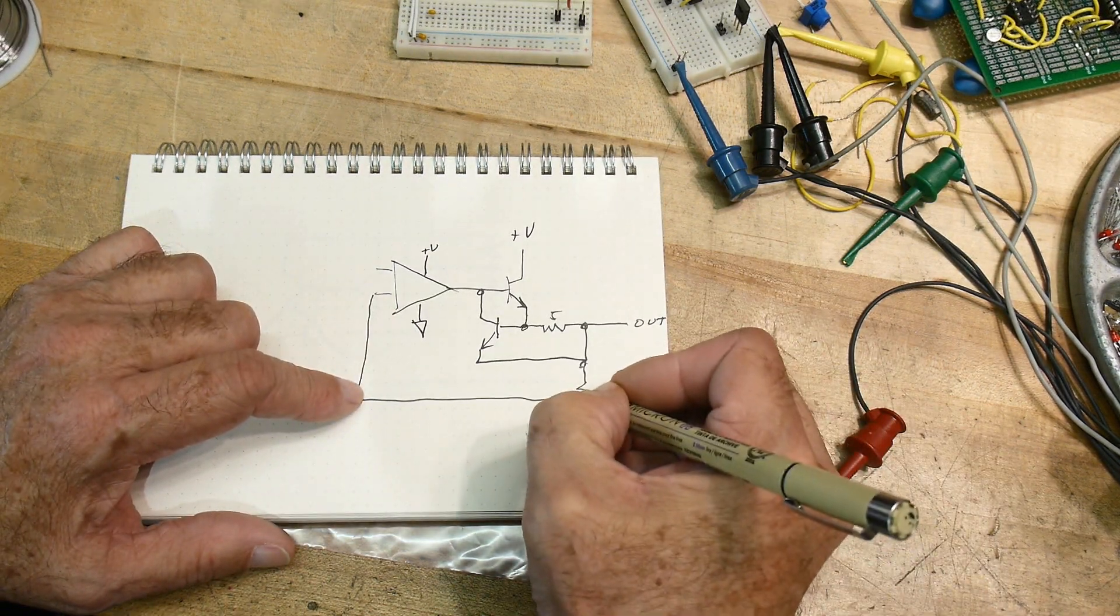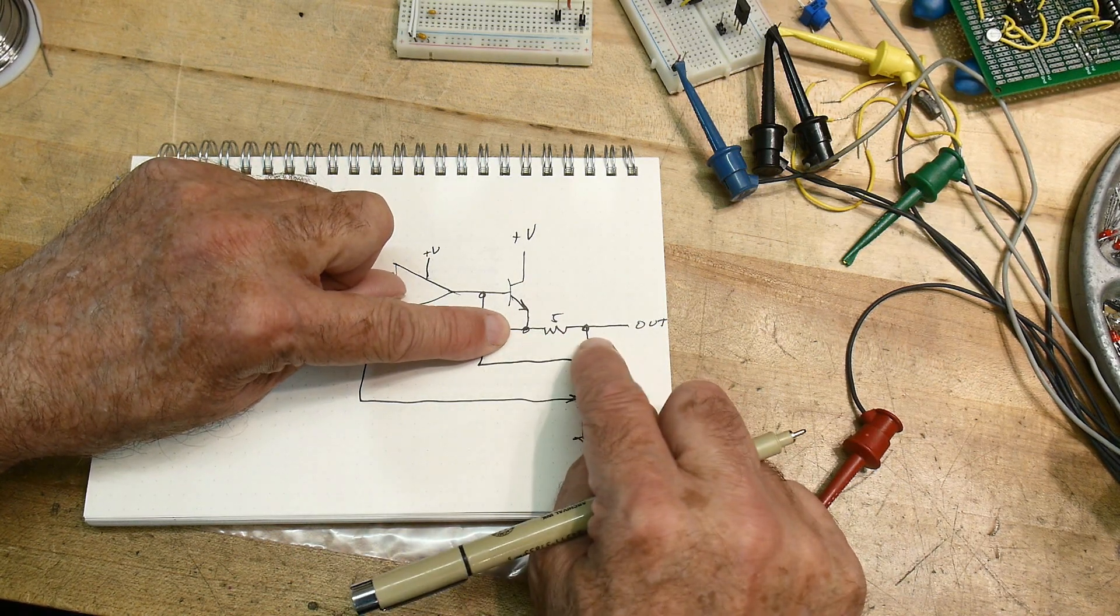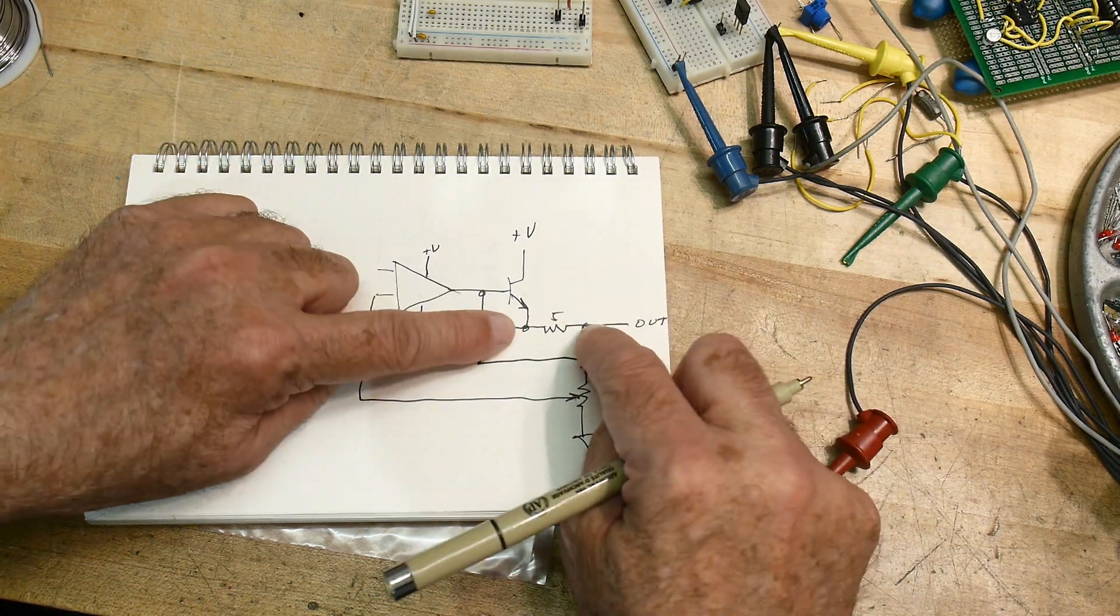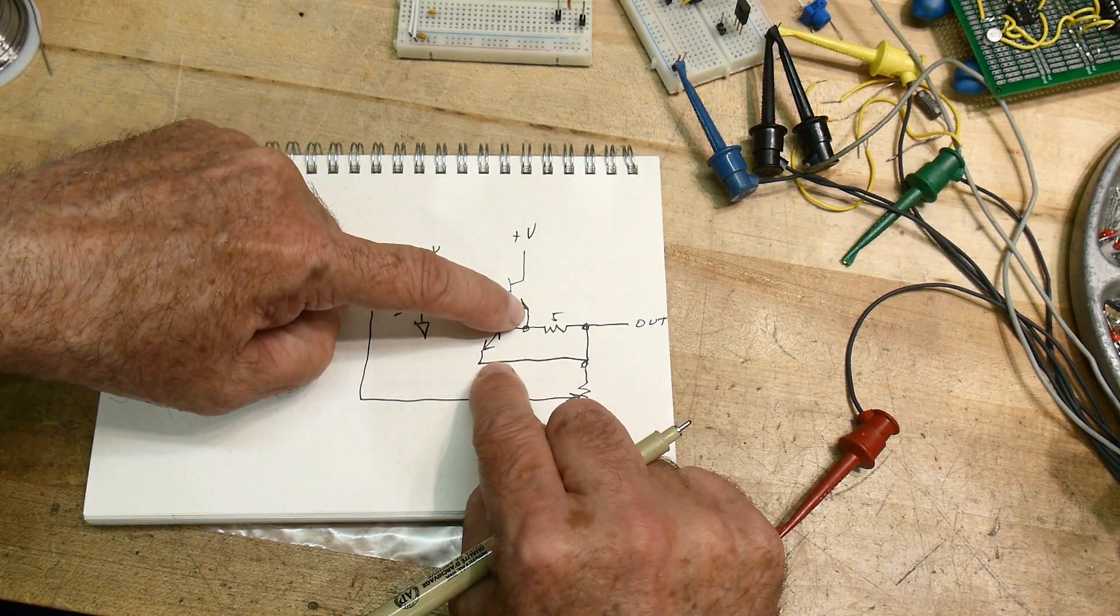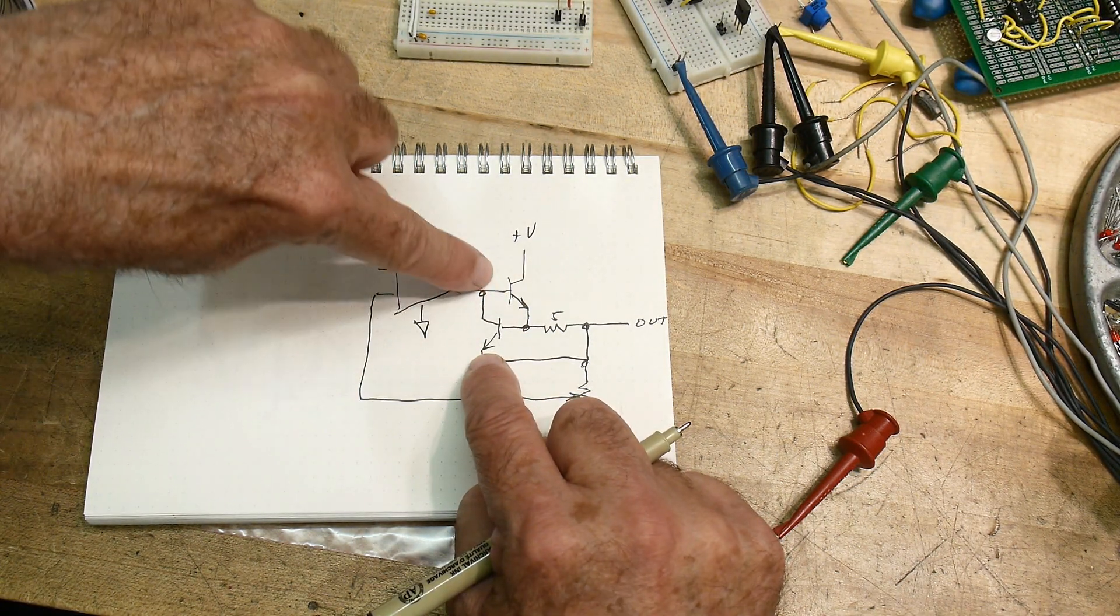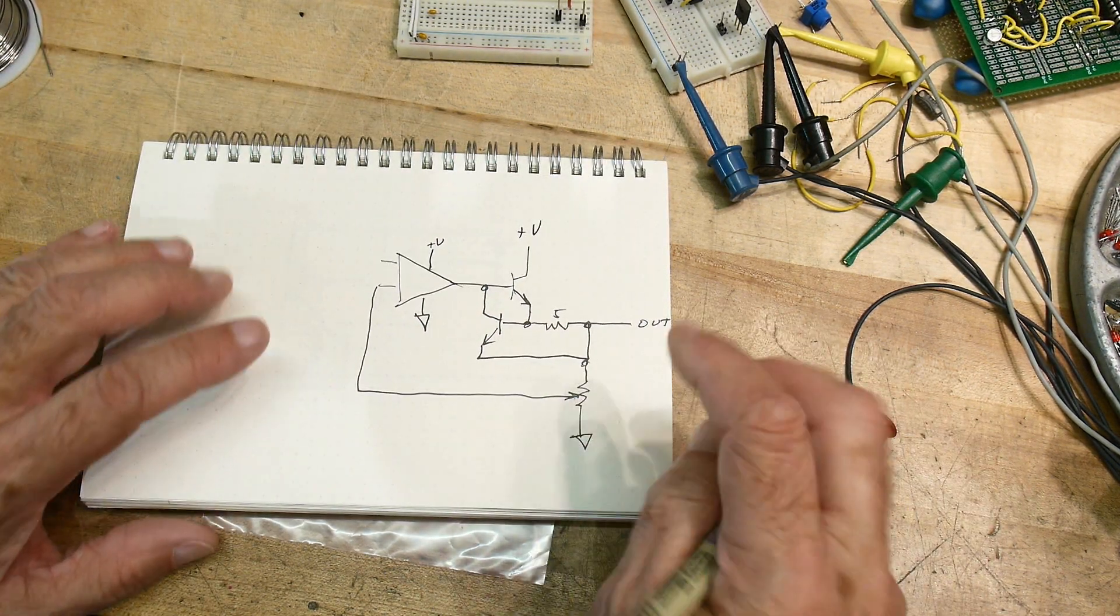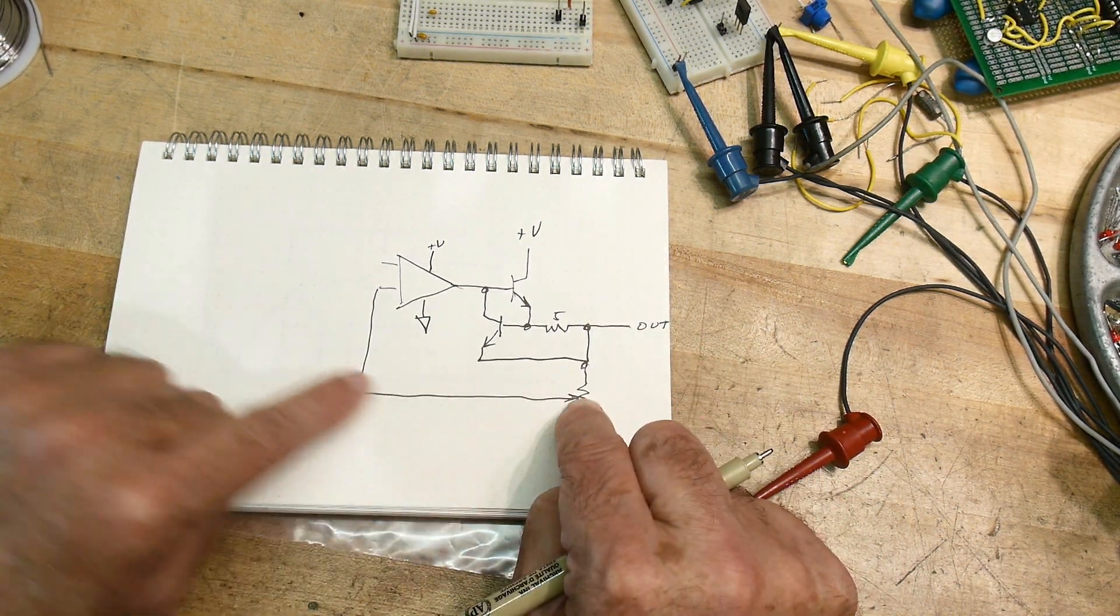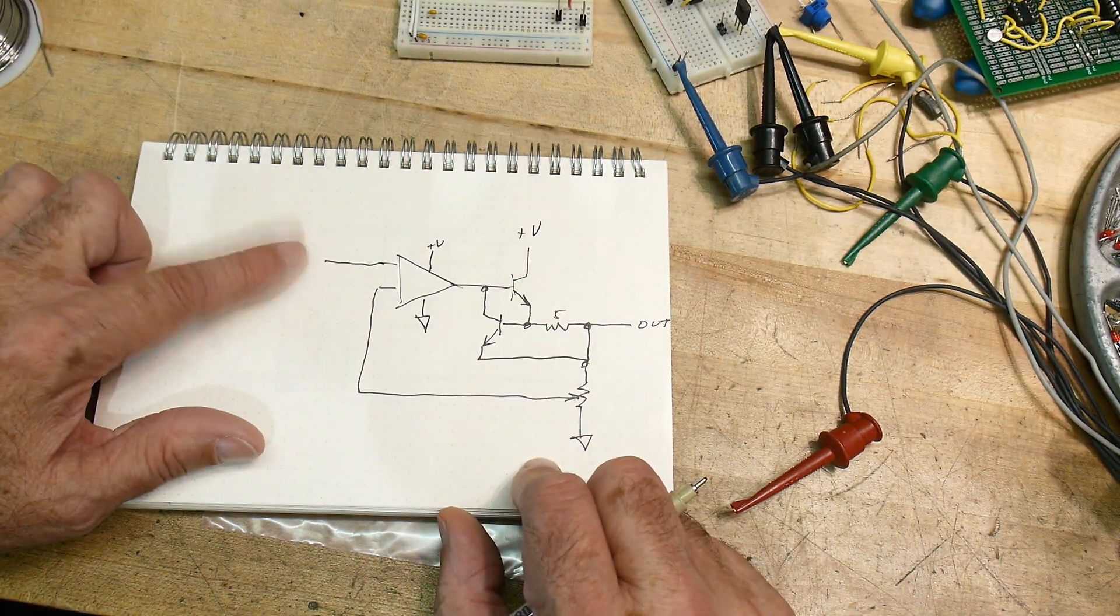Alright, so this is a little bit better I believe. So this is plus V, plus V, ground. So what's happening here is the transistor is turning on, it's going through this 5 ohms, and it's generating a voltage across this 5 ohms, which is generating voltage across the base emitter here.